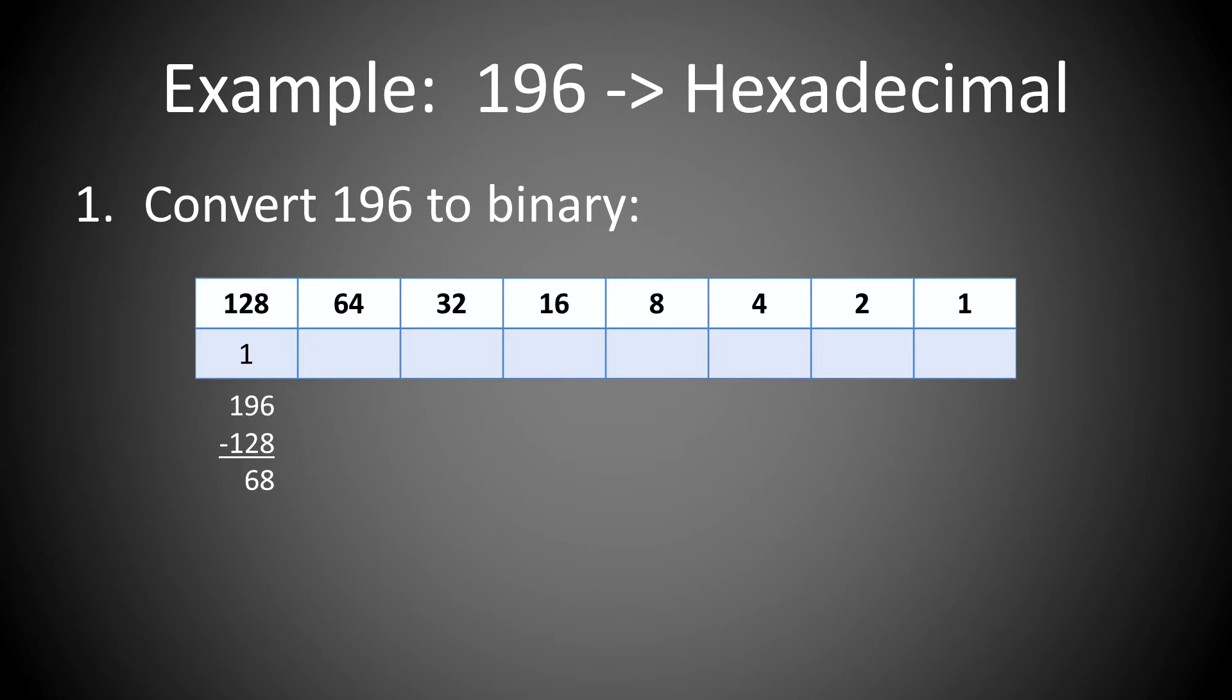So then you say, how many times does 64 go into 68? One time. Write down a 1, subtract 64 from 68, which leaves 4. For the next 3, 32 does not go into 4, 16 does not go into 4, and 8 does not go into 4, which leaves all zeros. When you get to 4, say how many times does 4 go into 4, which is obviously one time, which leaves a 0 for the rest of the bits.